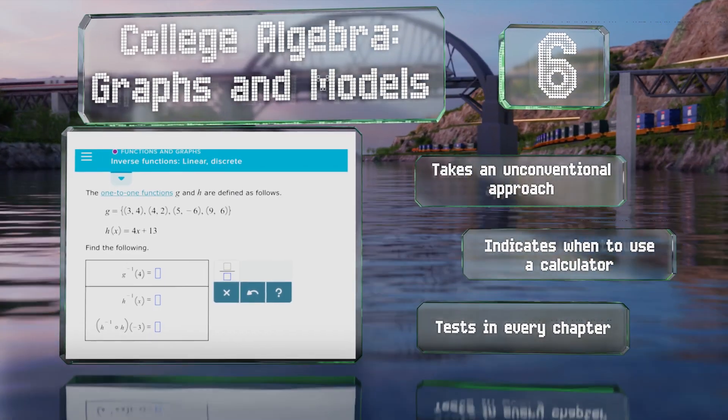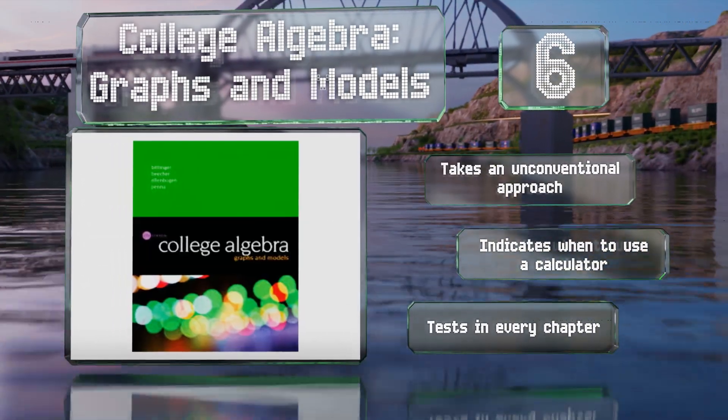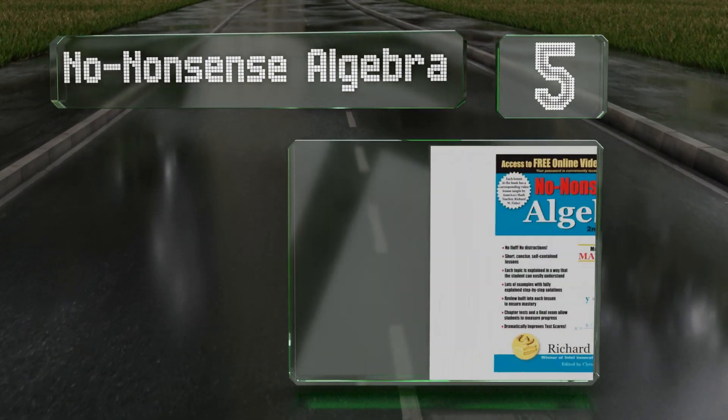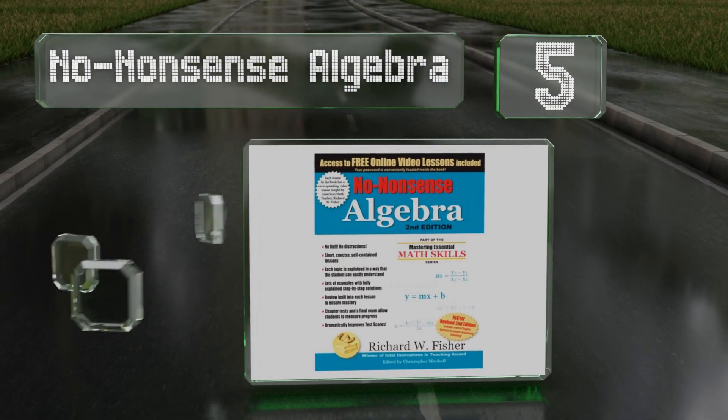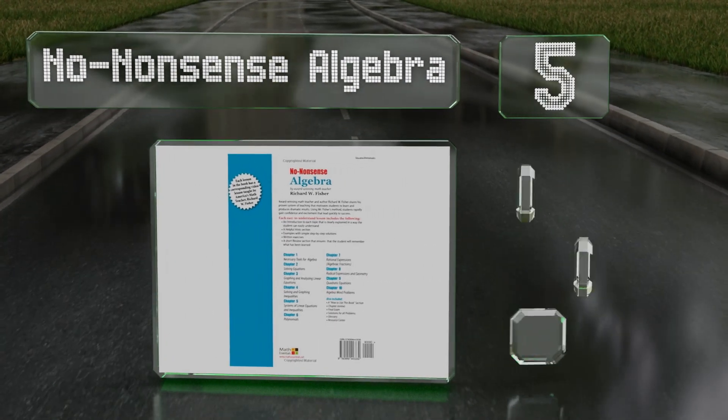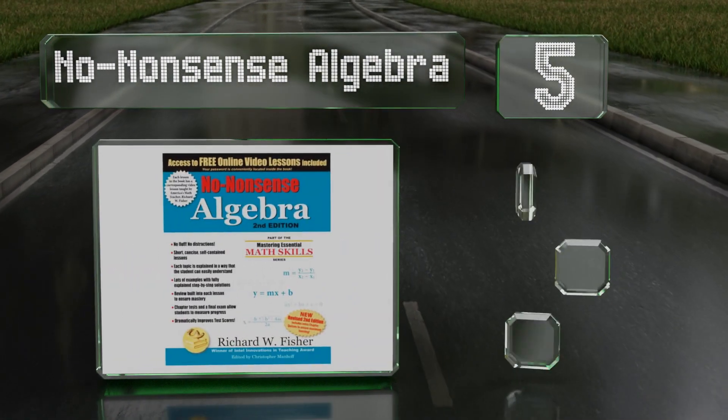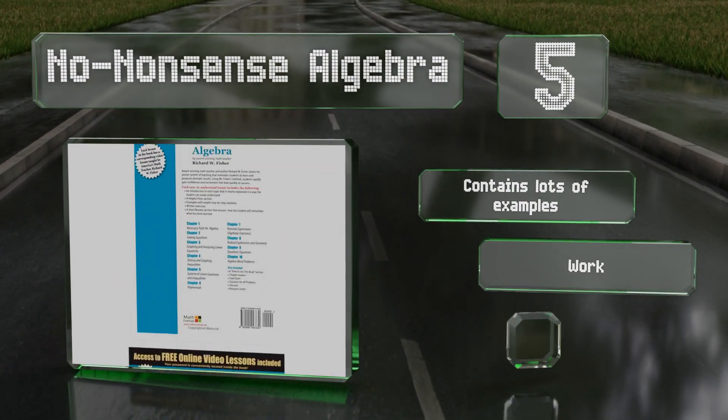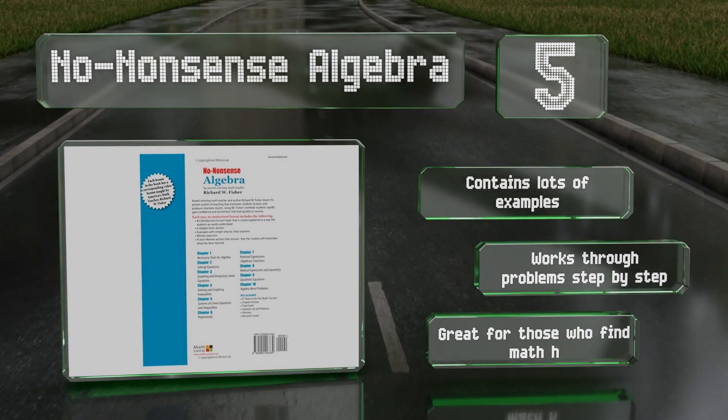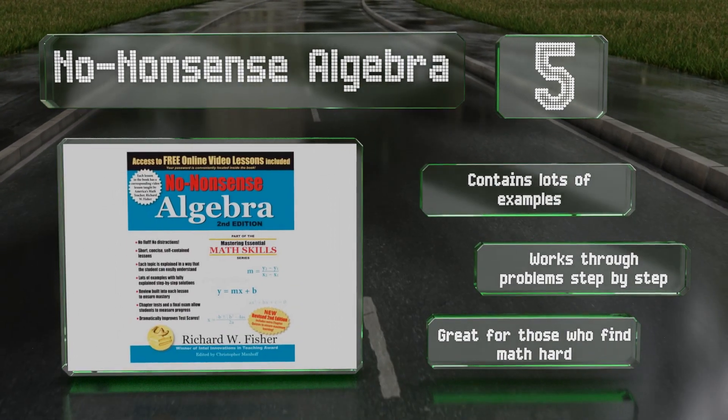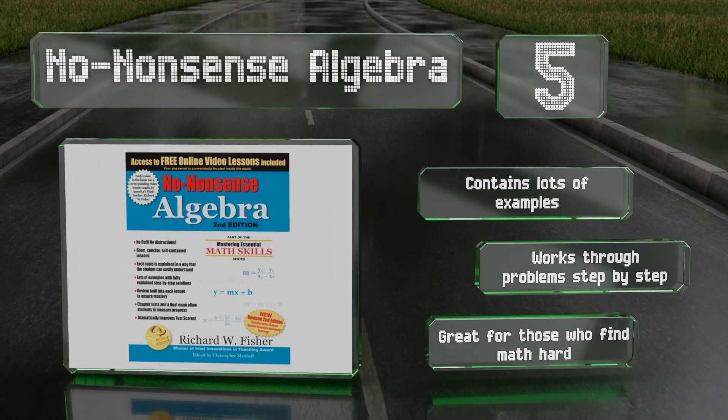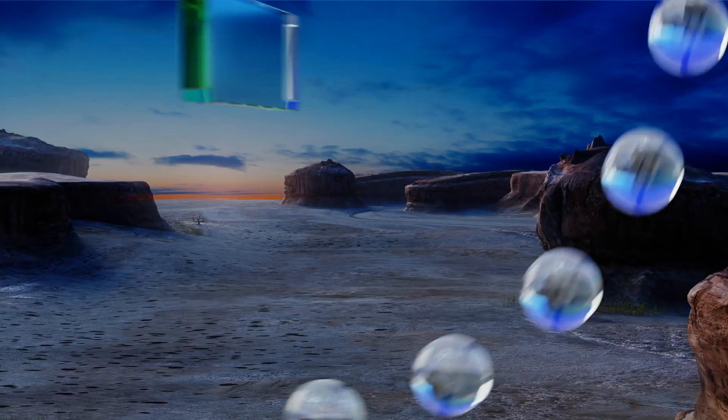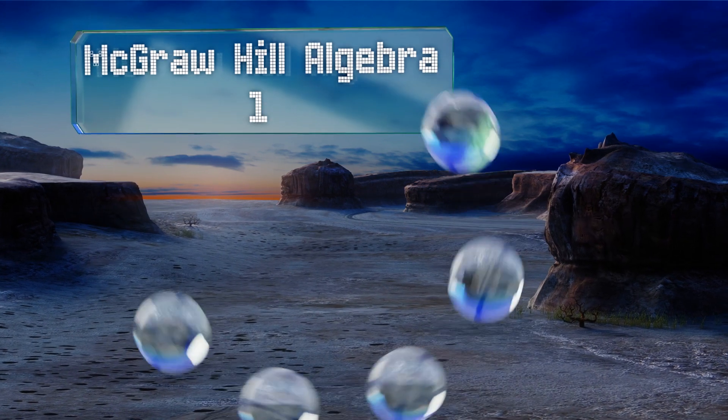Halfway up our list at number five, No-Nonsense Algebra reviews pre-algebra, expands beyond basic knowledge, and allows students to work their way up to more advanced material. The lessons are concise and simple with clear explanations to facilitate independent learning. It contains lots of examples and works through problems step by step. It's great for those who find math hard.